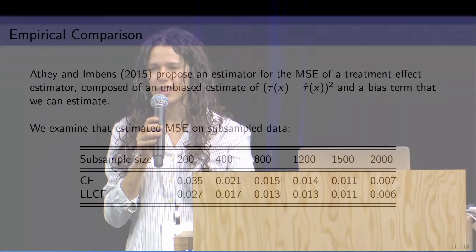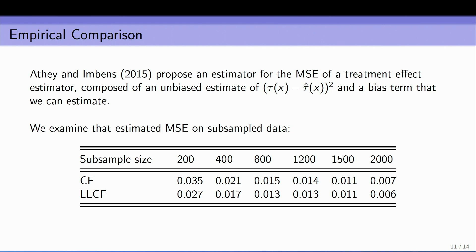We can actually evaluate this using the Athey-Imbens estimator for the error of any tau-hat estimating a treatment effect, decomposed into an unbiased estimate of the error and a biased term estimable from data. With 30,000 observations any reasonable method predicts similarly, so the real interest is when you subsample down to cases where you don't have access to 24 years of data. What I'm showing here are errors with the bias term subtracted out, and you can see the local linear correction helps quite a lot. On real data sets, heterogeneous treatment effect sizes are small, so these little improvements are actually incredibly meaningful.